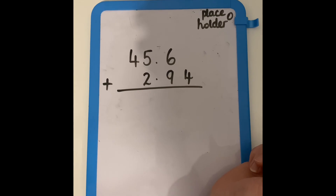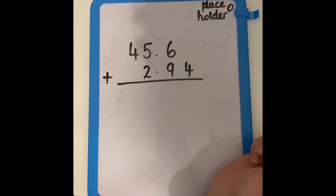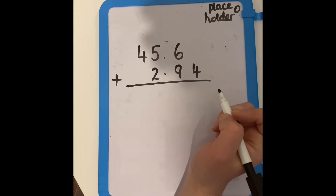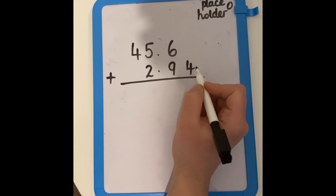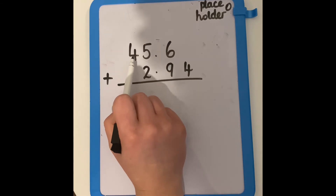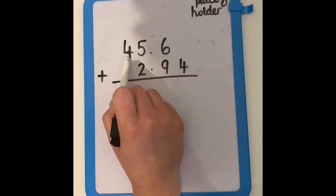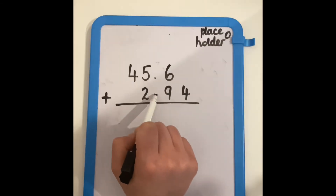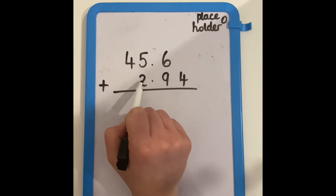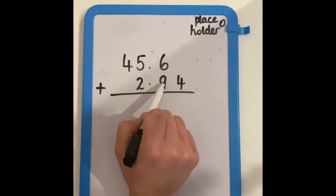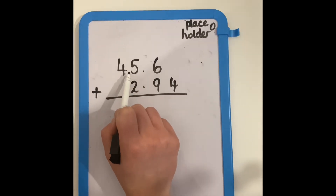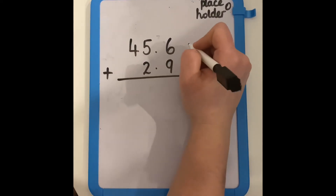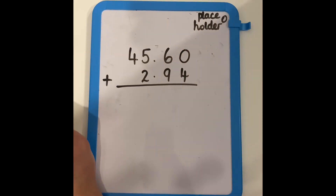We are now going to look at adding two decimals together, and we're going to continue using placeholders to help us. Thinking about the place value of both numbers: 45.6 has four tens, five ones, and six tenths. I can see that 2.94 has two ones, nine tenths, and four hundredths. I can see that 45.6 doesn't have any hundredths, so I'm going to use my placeholder in the hundredths column.